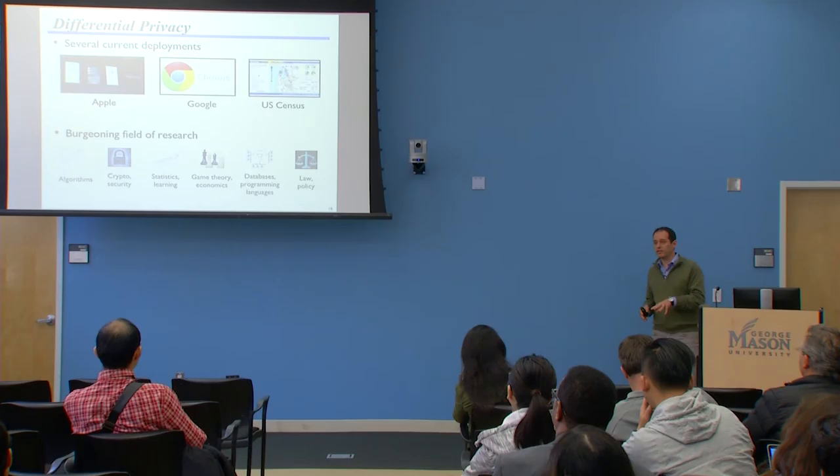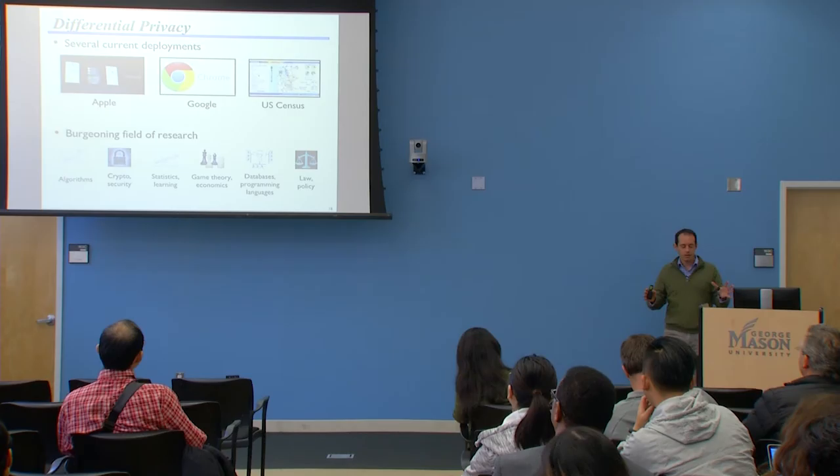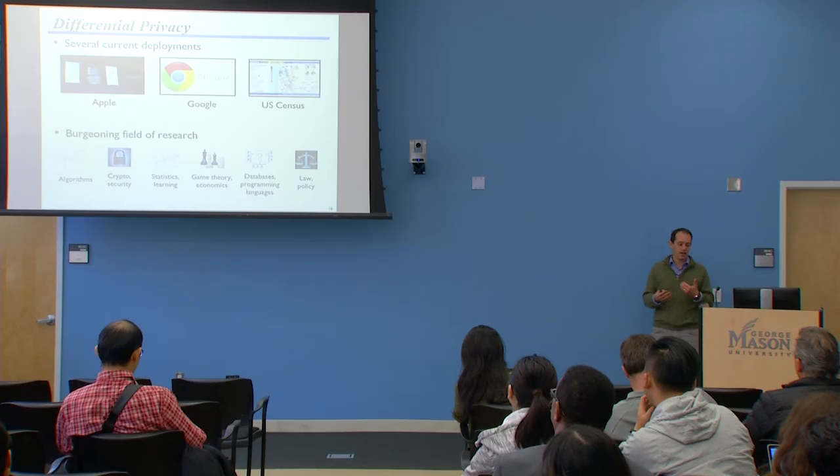Differential privacy is a burgeoning field of research that has grown far beyond crypto and data security into areas like algorithms, statistics, and learning. There are nice connections to game theory, systems design and verification, and also increasingly interesting connections with law and policy, where differential privacy — or a natural language version of it — is being used as a standard for various types of decisions.